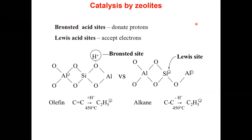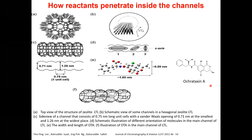Coming back to the acid sites present on zeolite: the silicon-aluminum-oxygen framework gives rise to Bronsted acid sites and Lewis acid sites. Bronsted acid sites involve proton donation; Lewis acid sites involve electron acceptance. This is the key difference between the two. This is the Bronsted acid site in a zeolite and this is the Lewis acid site. The reactants penetrate inside the channels to reach these active sites.